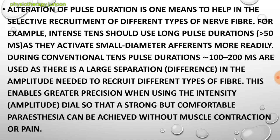During conventional TENS, pulse duration of 100 to 200 microseconds is used because there is a large separation in the amplitude needed to recruit different types of fibers. This enables greater precision when adjusting the intensity dial so that a strong but comfortable paresthesia can be achieved without muscle contraction or pain. The long pulse duration activates small diameter efferent fibers, while TENS pulse duration of 100 to 200 microseconds recruits different fiber types and is very comfortable for inducing paresthesia without excessive muscle contraction or pain.